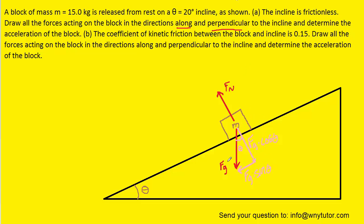Once we have those two components, we can actually get rid of the original gravitational force vector. That's not to say gravity doesn't exist, but we want to represent the forces along the incline as well as perpendicular to the incline, as the question stated. Most people will move the FG sin θ component so it's acting at the center of the block. So this would be the final free body diagram.